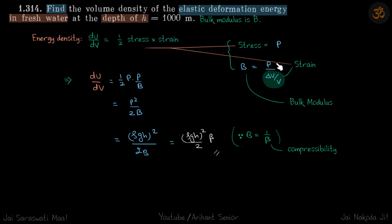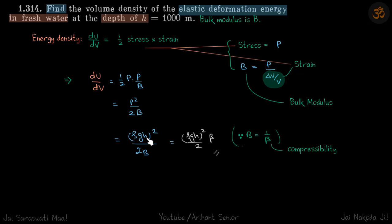We write half stress times strain as half pressure squared over bulk modulus, since we can eliminate strain by writing it as P divided by bulk modulus. So this becomes P² / 2B, and pressure is of course ρGH.